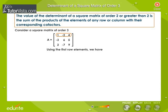Using the first row elements, we have cofactor A11 is equal to minus 1 to the power of 1 plus 1 into 6 into 9 minus minus 7 into 5. That is equal to 54 minus minus 35. That is equal to 89.